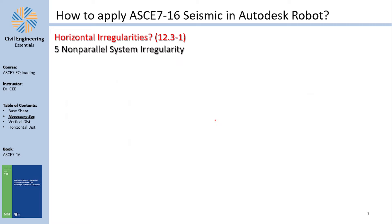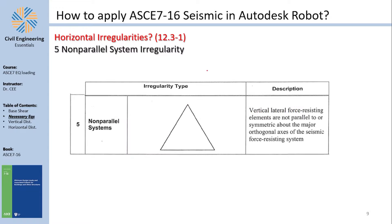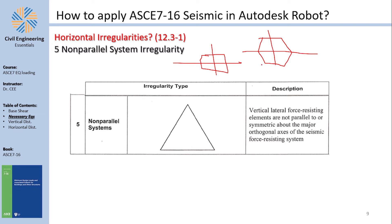Non-parallel system irregularity means that the lateral force resisting elements are not parallel or symmetric around the major orthogonal axes. For example, a triangular floor plan would qualify. The code states that elements must be parallel or symmetric around the major orthogonal axes x and y — rectangles and hexagons generally satisfy this.